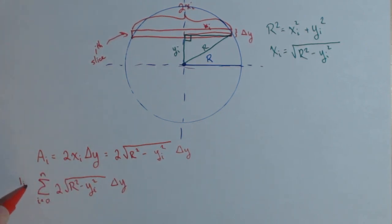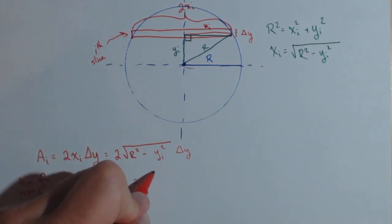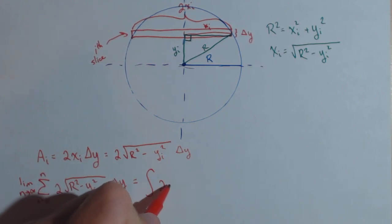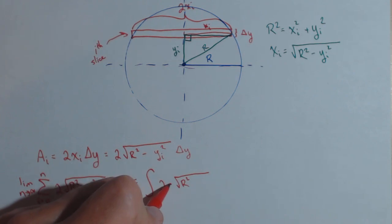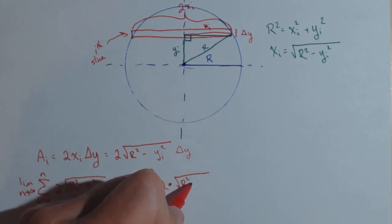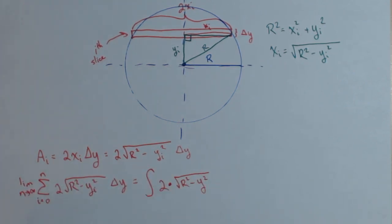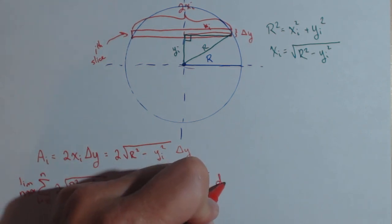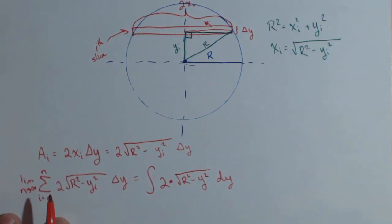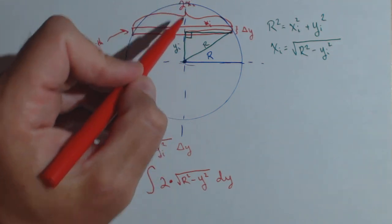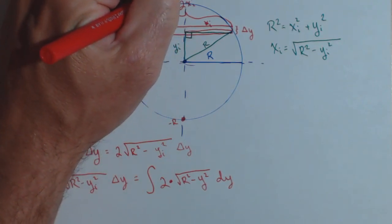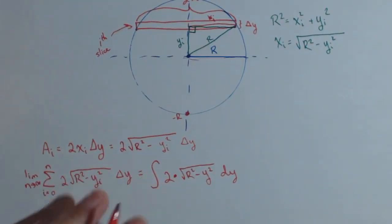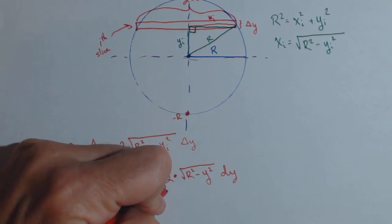We take the limit as n goes to infinity to get the continuous case, giving us a definite integral: 2 times the integral of the square root of r squared minus y squared dy. I don't write the sub i because we're no longer in the discrete case. For the limits, y ranges from negative r at the bottom to r at the top, so we integrate from negative r to r.